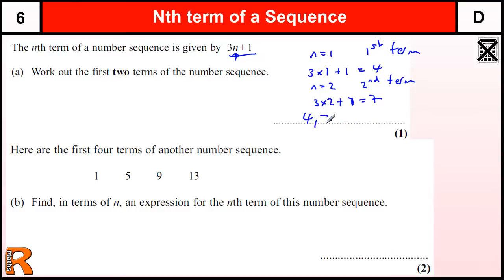So our first two terms are 4 and 7, and then from there we could continue it just by adding on 3 each time, because the 3n tells you what you're adding on. We've added on 3, then we go 10, 13, and so on.